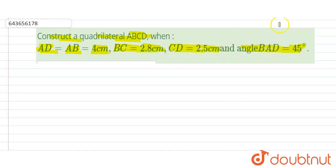So let us now construct a quadrilateral. First of all, let us draw a side AB which is given as 4 cm. So this is given as 4 cm.